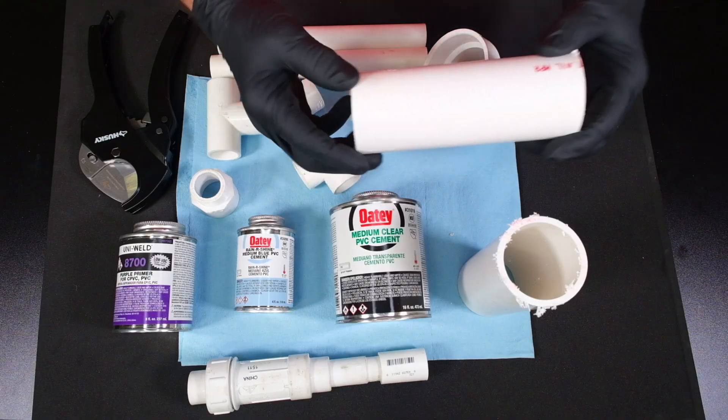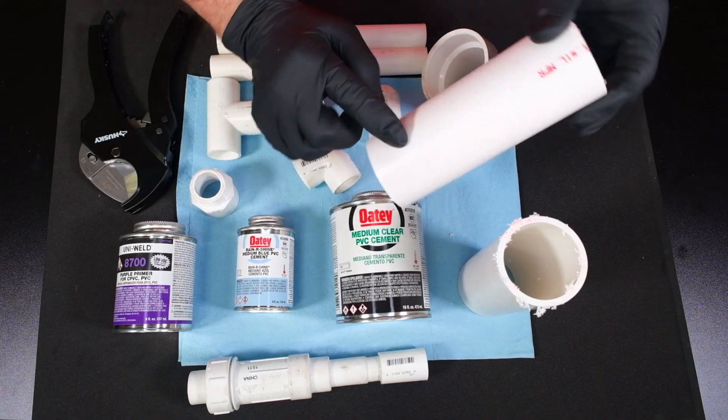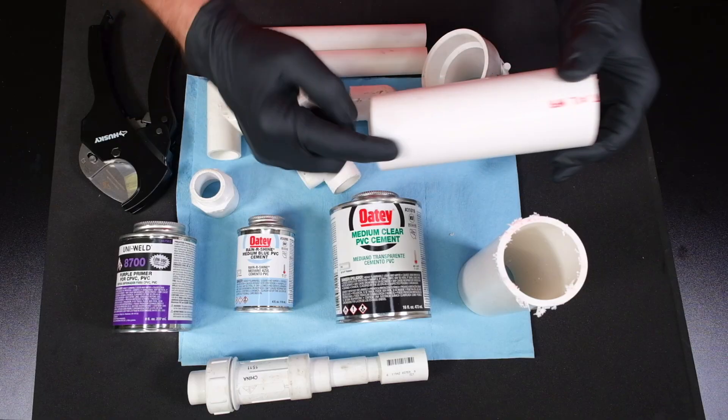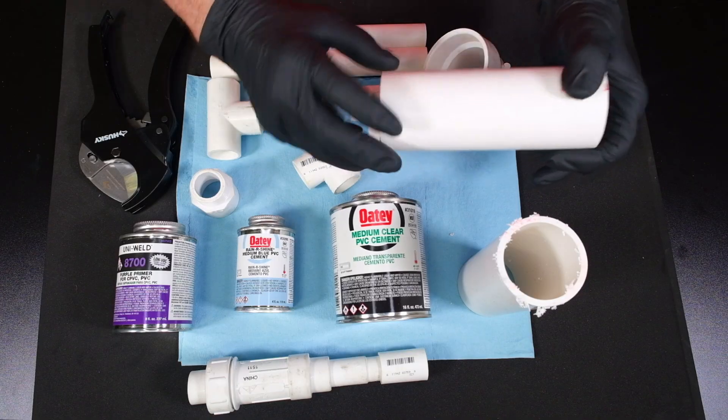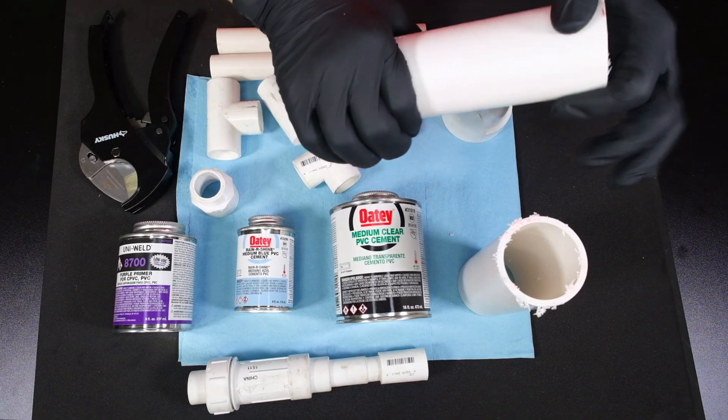Why do we use purple primer? You have to use purple primer on PVC pipe because that way an inspector can know that you used it. PVC pipe is required to have a primer on it. You can see it's got a shiny glaze on it. When we use the purple primer on it, it cuts that, softens the surface, and prepares it for the solvent cement to bond those two fittings together.